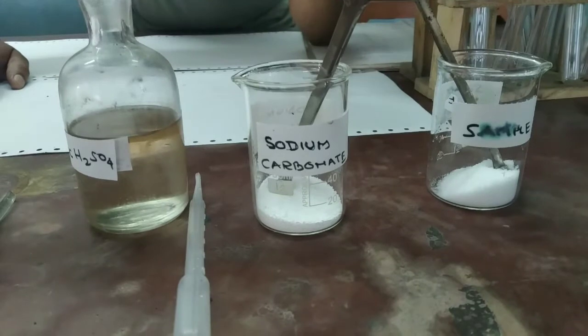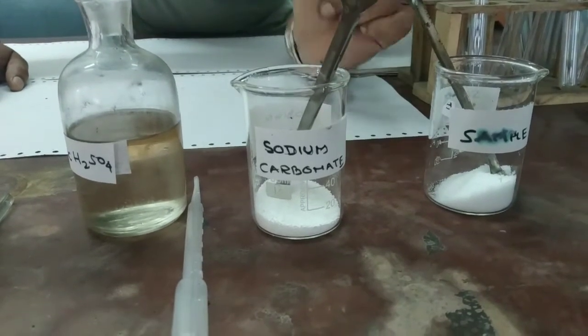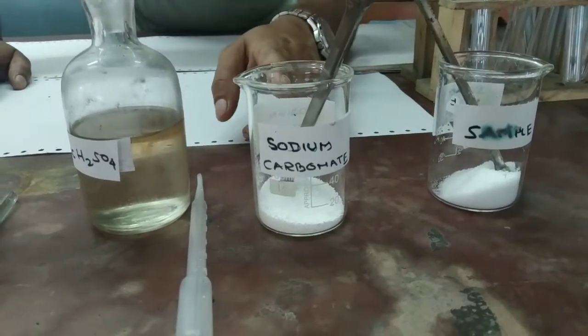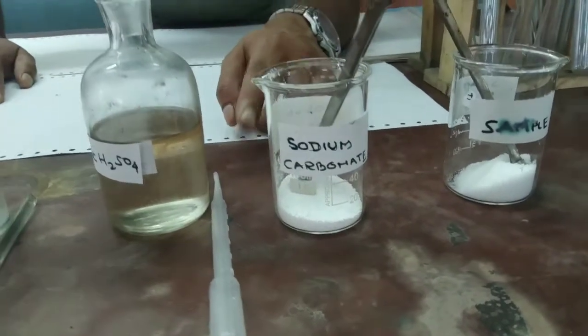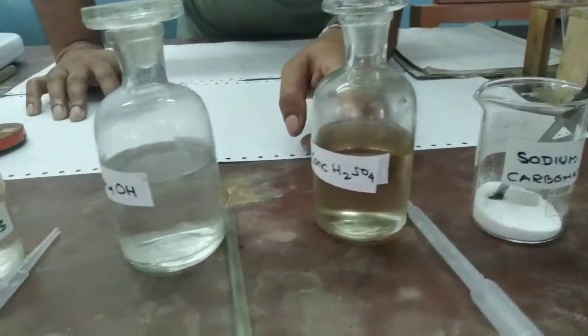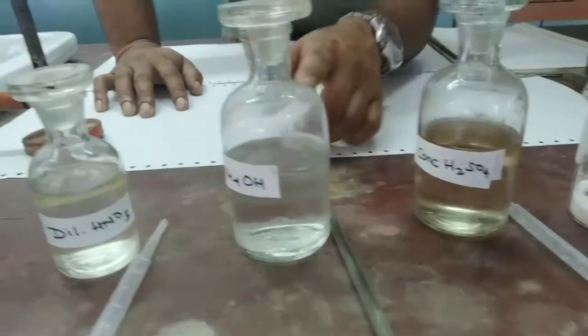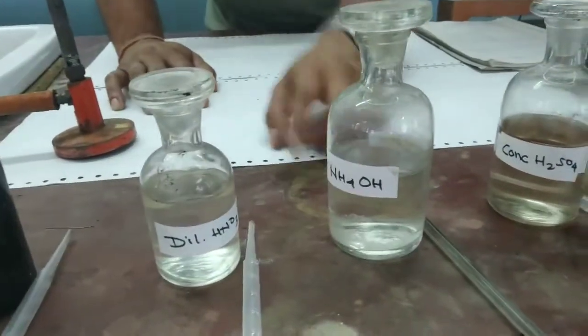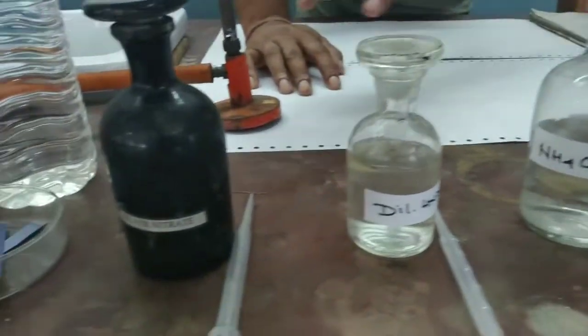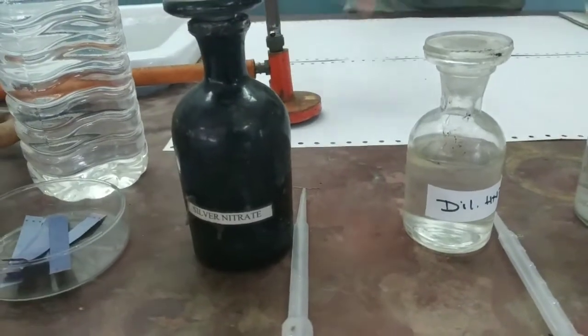We will deduce chloride ion from the salt and the requirements are sodium carbonate, concentrated sulfuric acid, ammonium hydroxide, dilute nitric acid and silver nitrate.